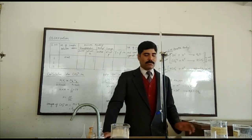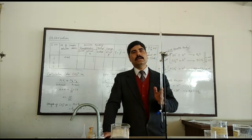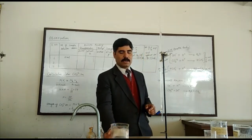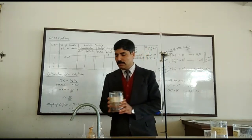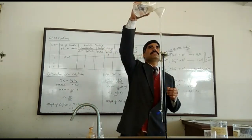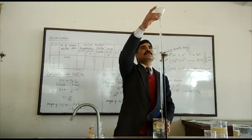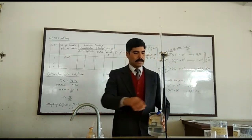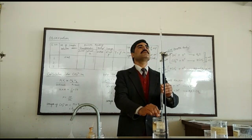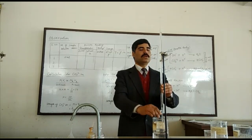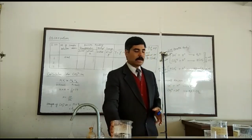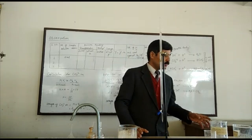Now we are going to perform the experiment. First of all we have to fill the burette. This is the 50 ml burette which we fill with the standard solution, that is N/10 HCl. We fill the burette with the help of a funnel. Remove the funnel when the lower meniscus of the liquid is set at zero, and the burette is completely filled with the standard solution at mark zero.